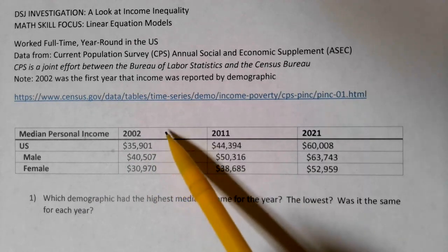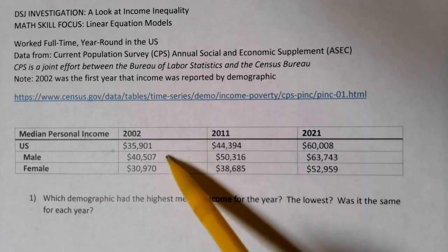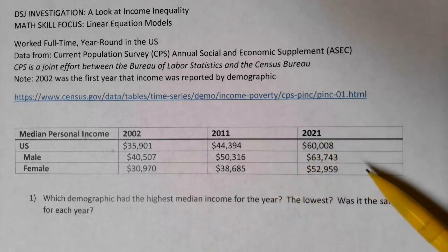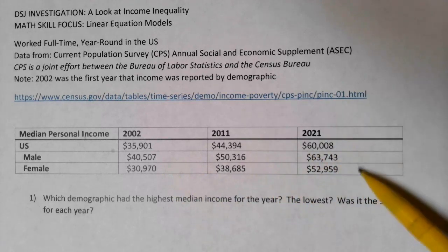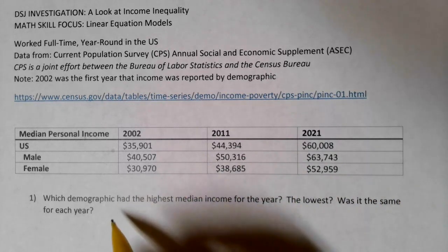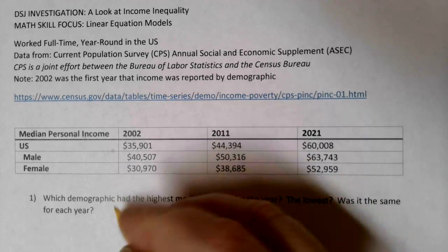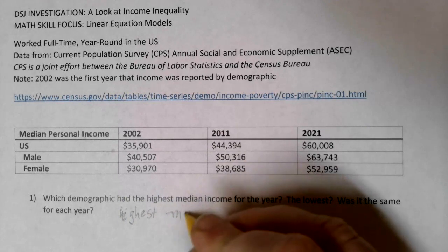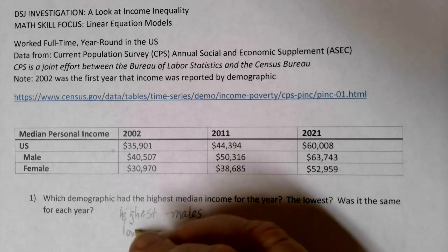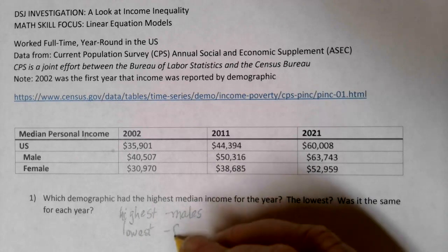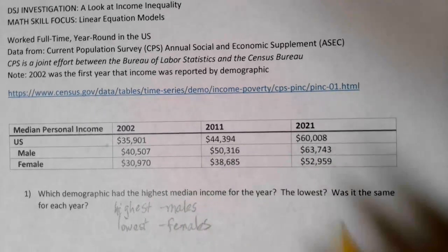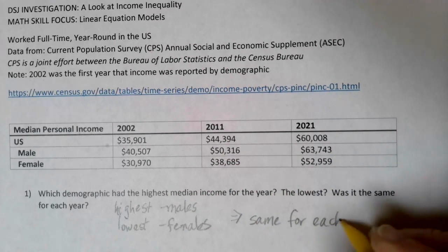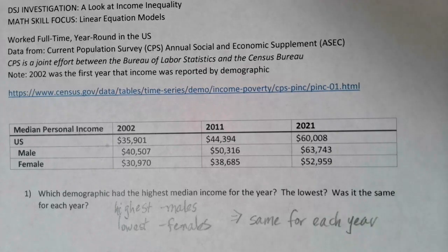Not surprisingly, in 2002, the male median income was about $10,000 higher. In 2011, it was about $12,000 higher, and in 2021, it was about $11,000 higher. So answering the question: our highest demographic is males, and our lowest demographic is females. And yes, this was the same for each year — they didn't take turns in who was higher and who was lower over time.